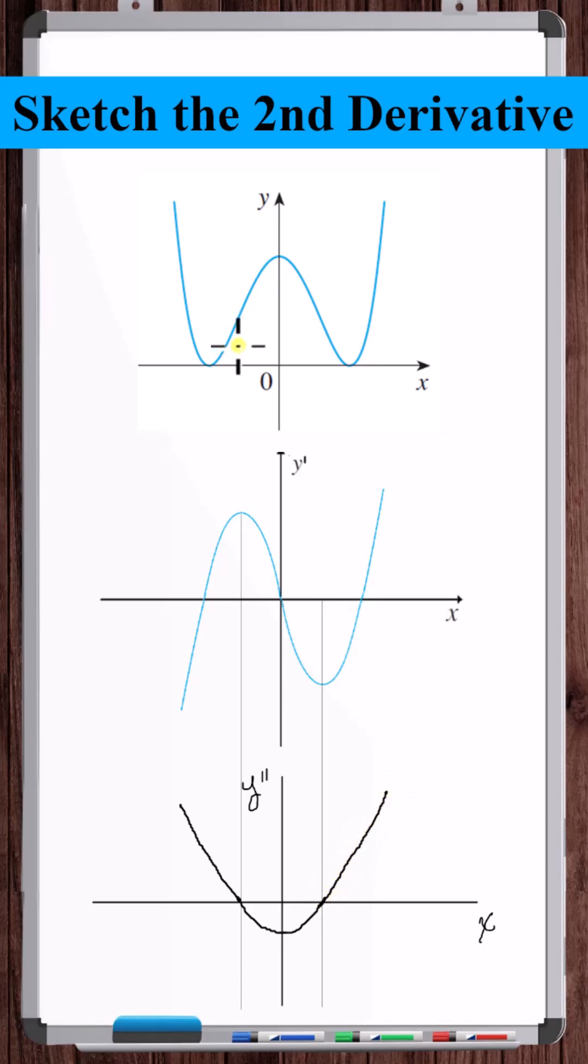If we compare this to the original function, the original function starts concave up and then switches to concave down here. So it goes negative. It's concave down until this point, until it switches back to concave up. So it becomes positive.